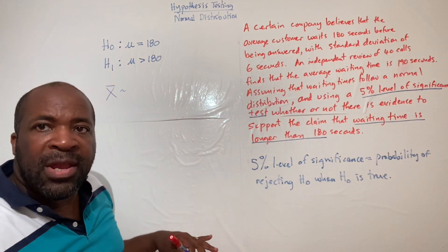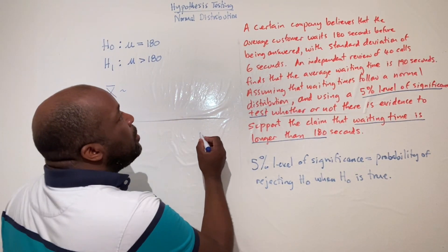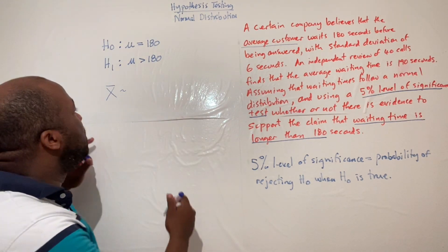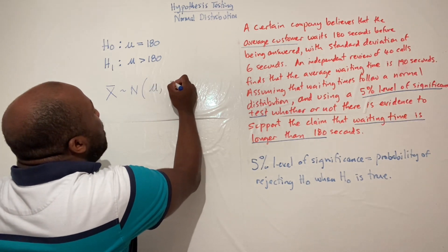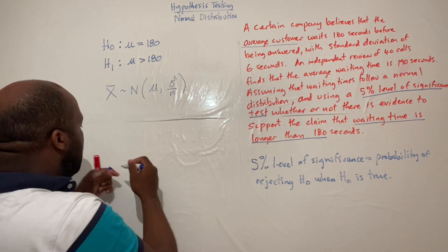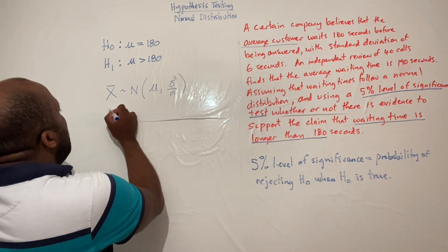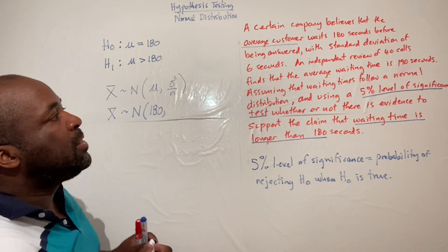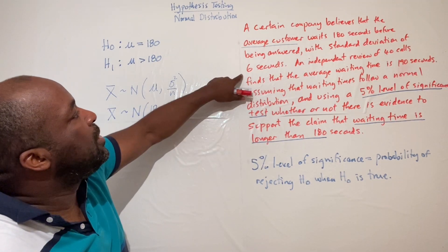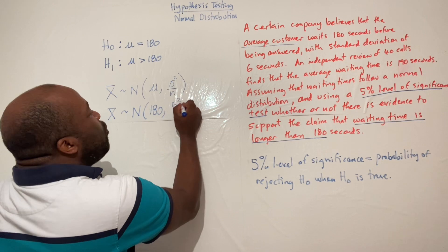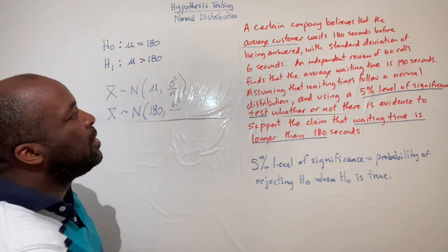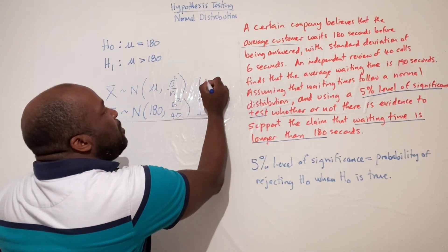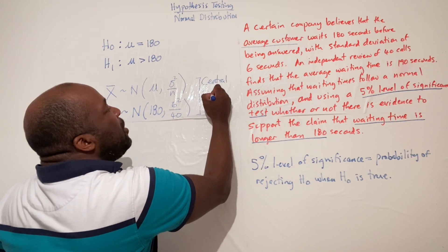Since we're working with the sample mean, X-bar follows a normal distribution with mean μ and variance σ² / n. In this problem, the mean is 180, σ is six seconds, and n is 40 (the sample size from the independent review of 40 calls).